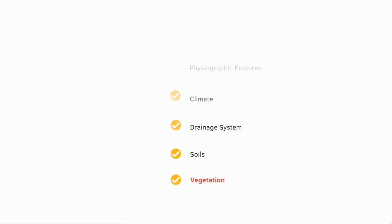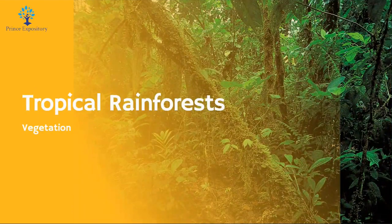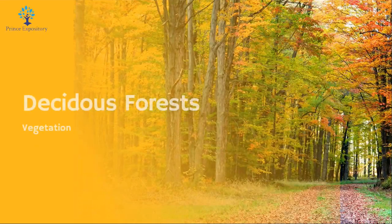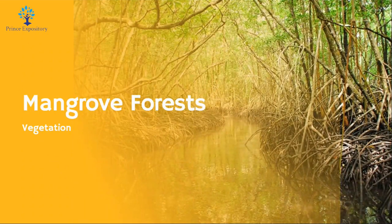Vegetation includes tropical rainforests, deciduous forests, thorn forests and desert vegetation, and mangrove forests. Tropical rainforests are found in the Western Ghats and parts of the north-eastern states, characterized by dense and diverse vegetation. Deciduous forests are found in the central and eastern parts of India, losing leaves during the dry season. Thorn forests and desert vegetation occur in arid regions like the Thar Desert. Mangrove forests are found along coastal areas, especially in the Sundarbans delta.